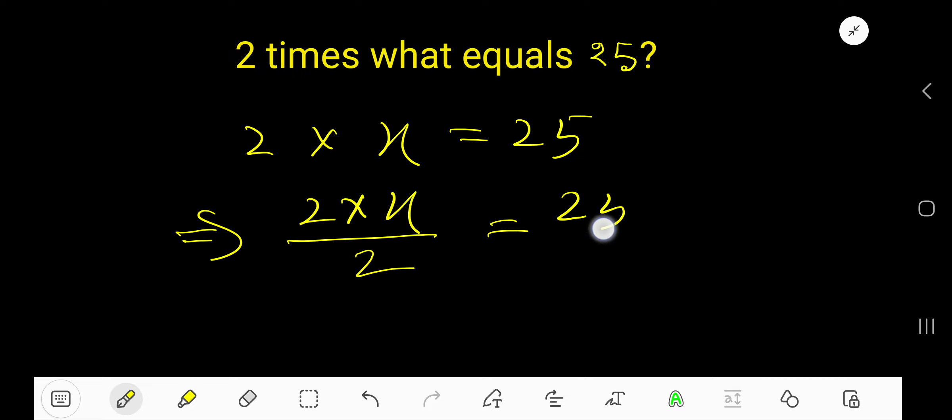Cancel this 2 with this 2, so we are getting x equals 25 divided by 2.